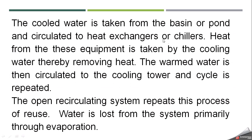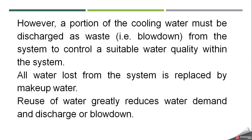The cooled water is taken from a basin or pond and circulated to a heat exchanger or chiller. Heat from the equipment is absorbed by the cooling water, removing the heat. The warm water is then circulated back to the cooling tower and the cycle is repeated. The open recirculating system continuously reuses water, with water lost primarily through evaporation. However, a portion of the cooling water must also be discharged as waste, known as blow down.